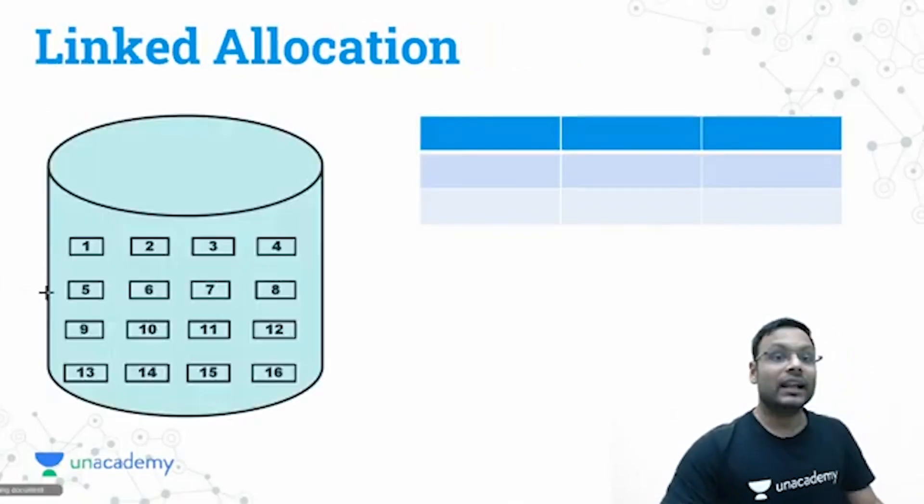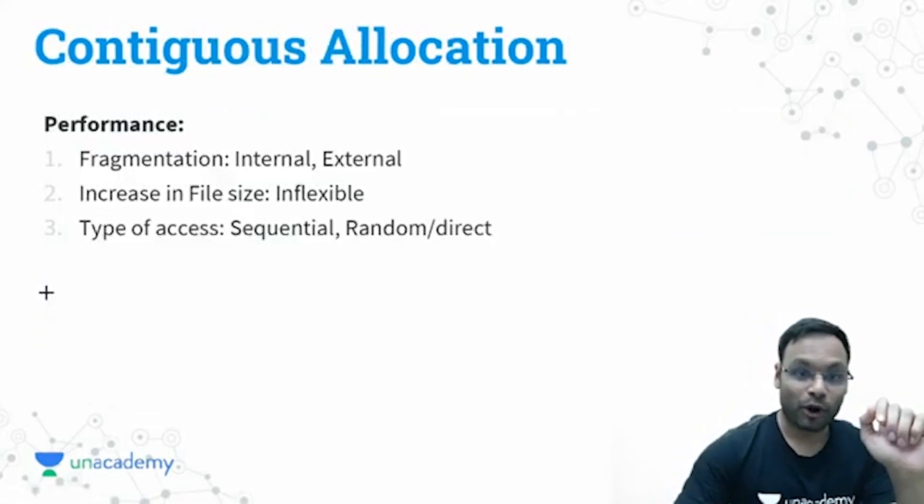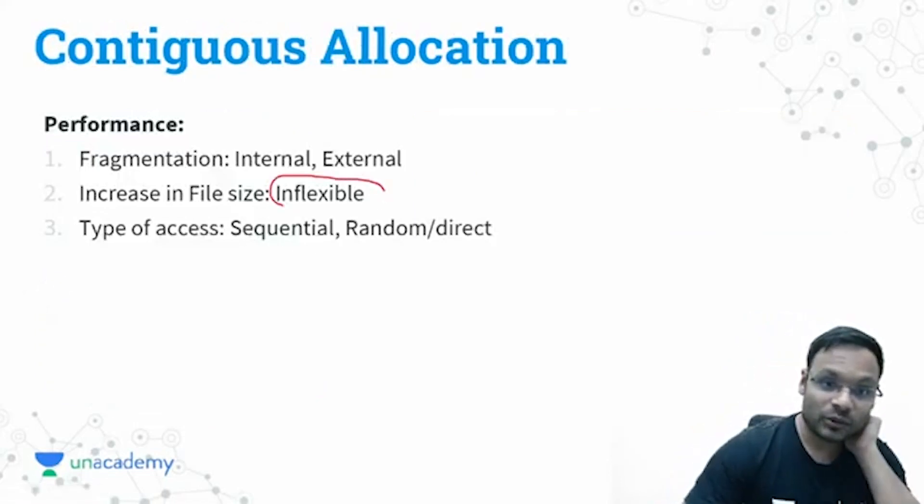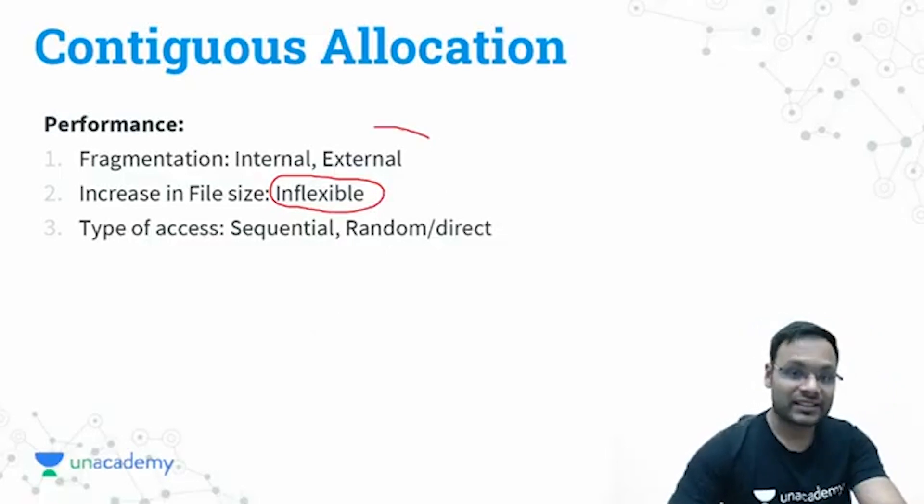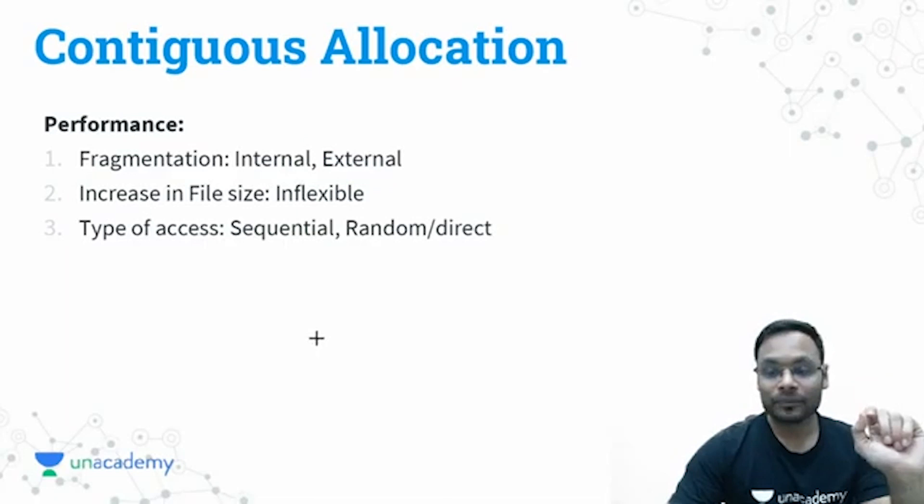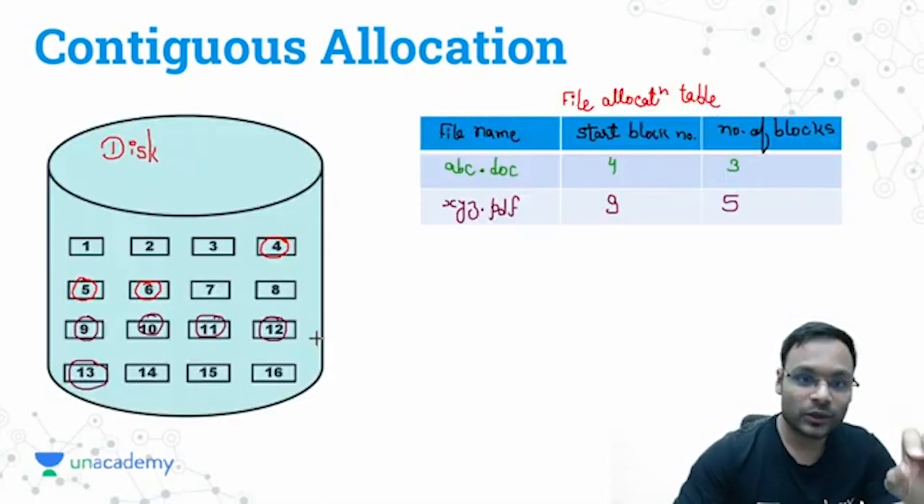This is linked allocation to solve this problem. Contiguous allocation gives you the problem of inflexibility and external fragmentation. These two problems can be solved in the linked allocation.